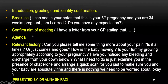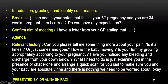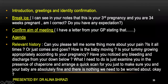Applying the template to the domestic violence task: after introduction and breaking ice, confirm it is the third pregnancy at 24 weeks. Set an agenda. Even if there is no information gathering task stated, take relevant history because it helps form the management plan. Ask: 'Can you tell me more about your pain — is it all times or does it come and go? How is the baby moving? Is your tummy growing appropriately? Have you noticed any bleeding or discharge?' For the examination plan, say: 'I need to examine you in the presence of a chaperone and arrange a quick scan to make sure you and the baby are absolutely fine and there is nothing to be worried about.'